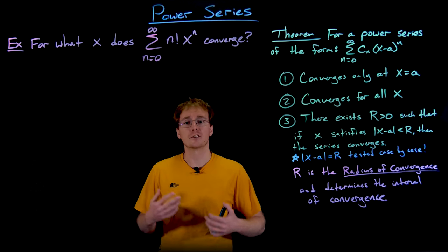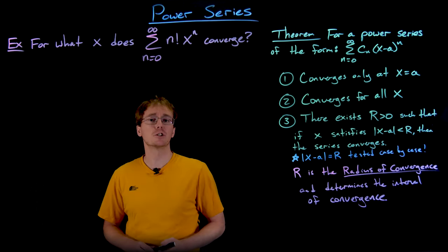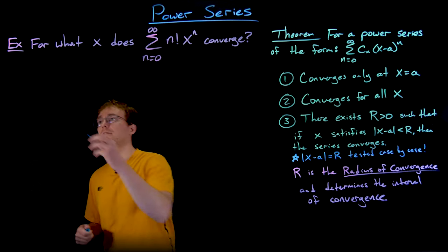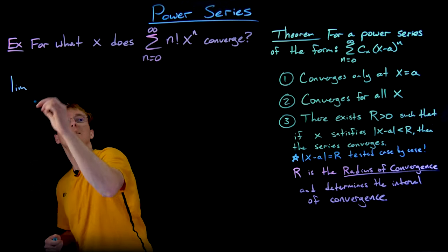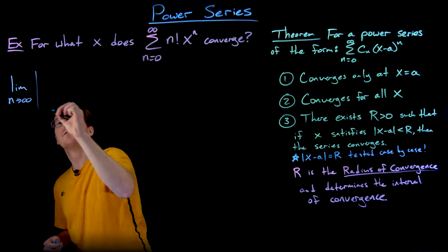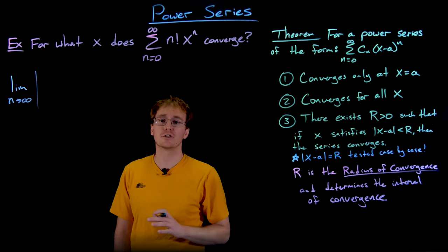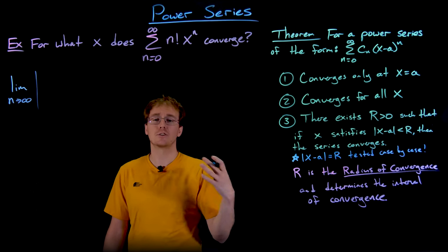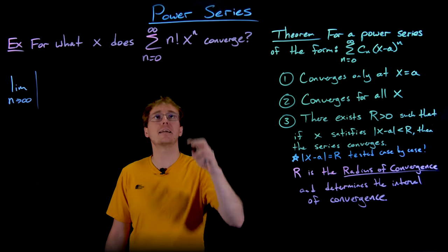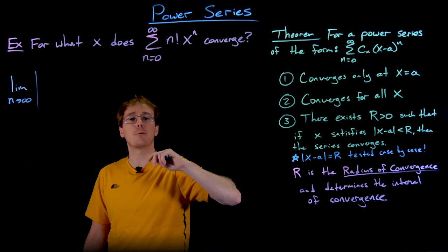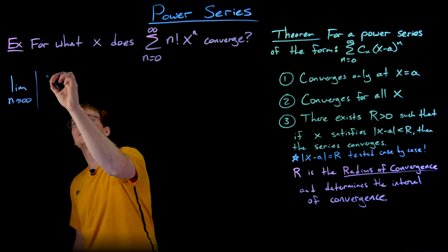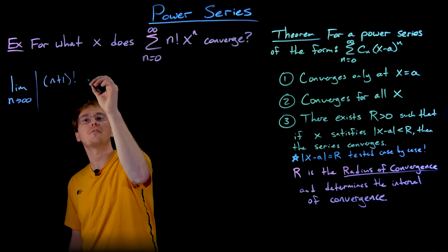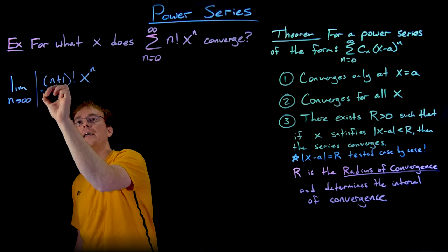To start figuring out our interval of convergence for this power series, we have to do the ratio test. We look at the limit as n approaches infinity of the ratio of the (n+1)th term to the nth term. The (n+1)th term is found by replacing each n with n+1 in the general term, giving us (n+1) factorial times x to the power of n+1.